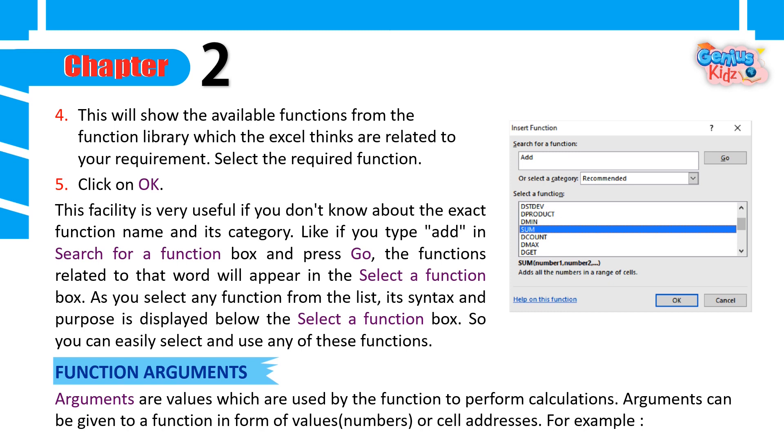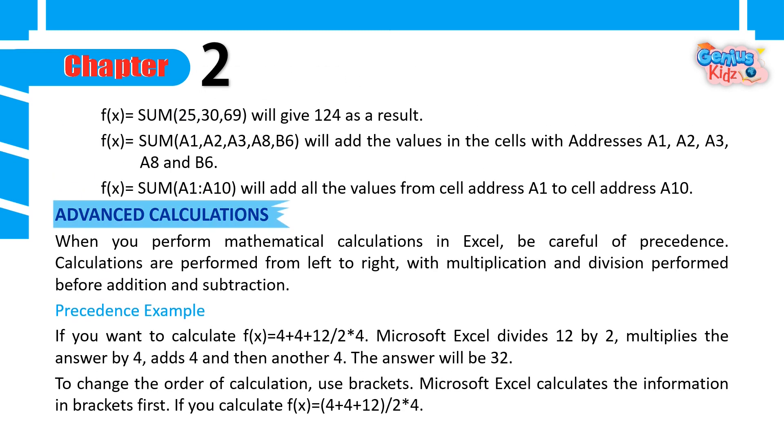Function Arguments: Arguments are values which are used by the function to perform calculations. Arguments can be given to a function in form of values, numbers, or cell addresses. For example, equals sum 25, 30, 69 will give 124 as a result. Equals sum a1, a2, a3, a8, b6 will add the values in the cells with addresses a1, a2, a3, a8, and b6. Equals sum a1 to a10 will add all the values from cell address a1 to cell address a10.